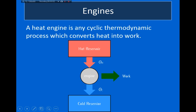Hello and welcome back. In this video, I want to describe how we can convert the kinetic energy associated with the random motion of molecules inside a gas into a useful form of energy which we can use to do work. The way that we do this is through something called a heat engine, which uses a cyclic thermodynamic process to convert heat into work.